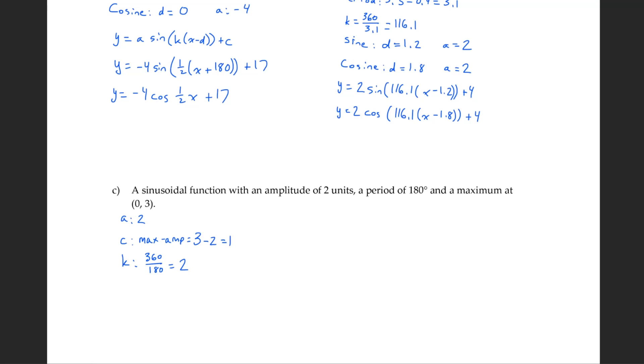Now we need the differences for sine and cosine. It starts at the maximum. I'm going to do cosine first. d, 0. And it's at its maximum, so a is still positive.